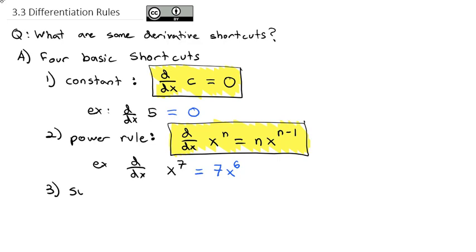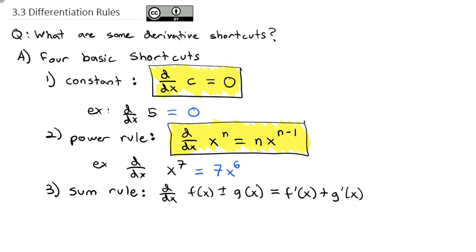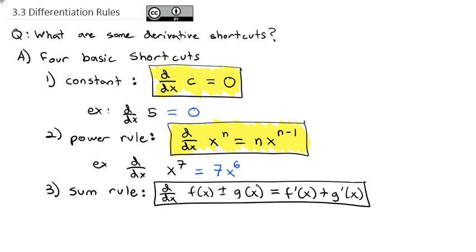A third rule is called the sum rule — often called the difference rule as well because it works with plus or minus. The idea is if I take the derivative of some function plus or minus another function, where I know the derivative of the individual pieces, all I have to do is take the derivative of the individual pieces. It's f prime plus g prime of x. For example, combining the power rule and the sum rule together — it should be plus or minus — if I wanted the derivative of x to the fifth minus x squared plus x plus two.